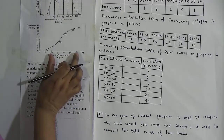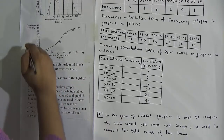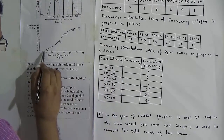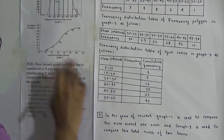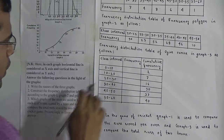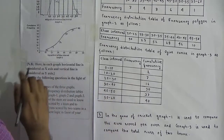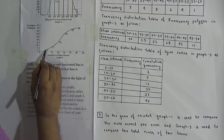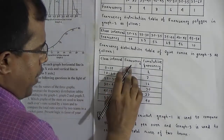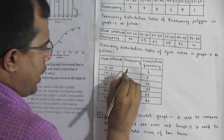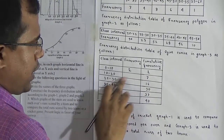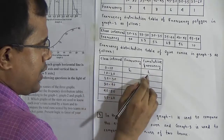In the ogive curve, along the x-axis the upper limit of class intervals exists, and along the y-axis cumulative frequency exists. The class intervals are: 0–10, 10–20, 20–30, 30–40, 40–50, and 50–60. The cumulative frequencies given are: 2, 7, 16, 30, 37, and 40. For finding frequency of the 0–10 class interval, it is the same as cumulative frequency: 2. For the second class interval, 7 minus 2 equals 5.